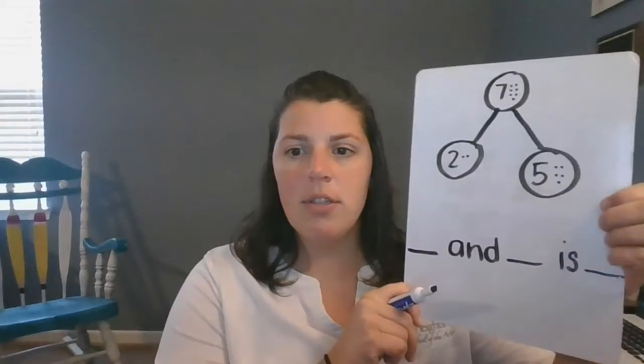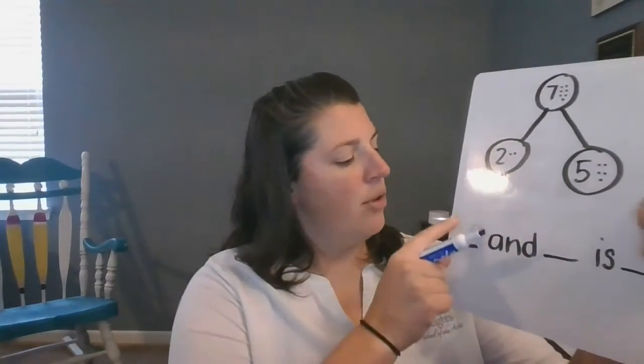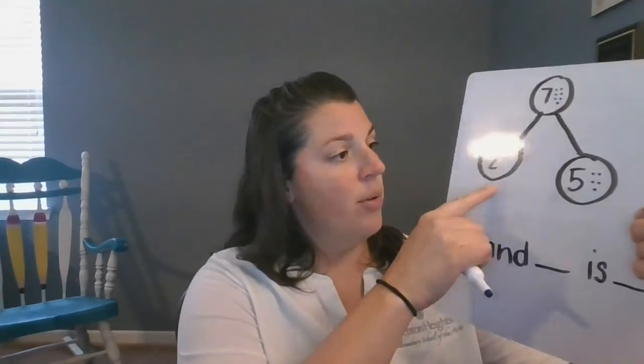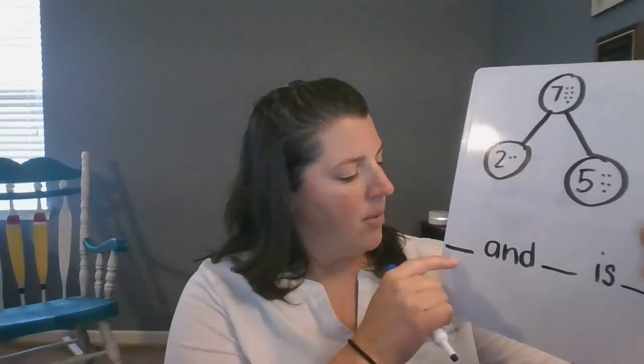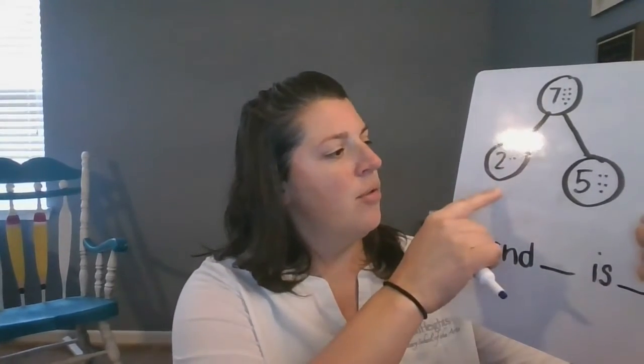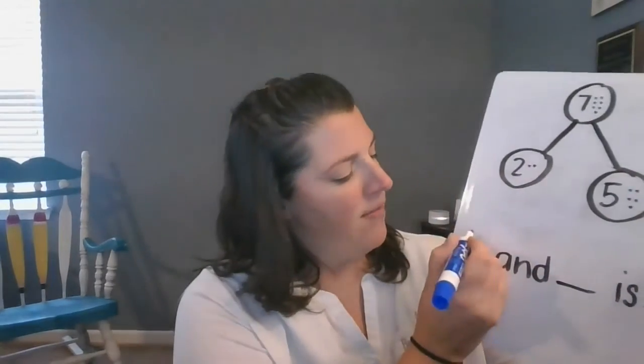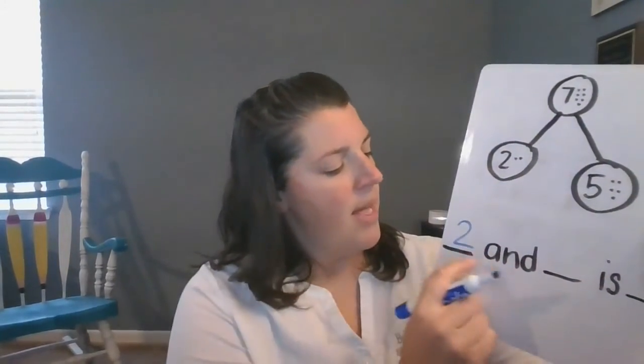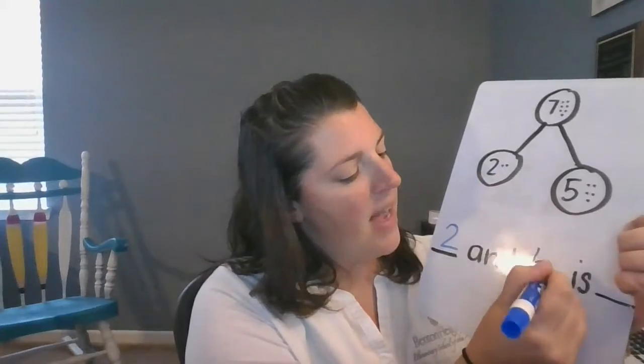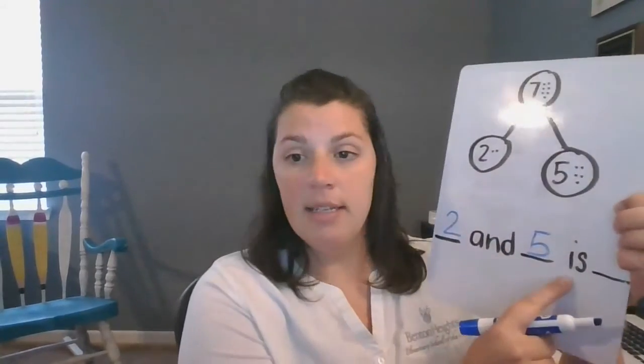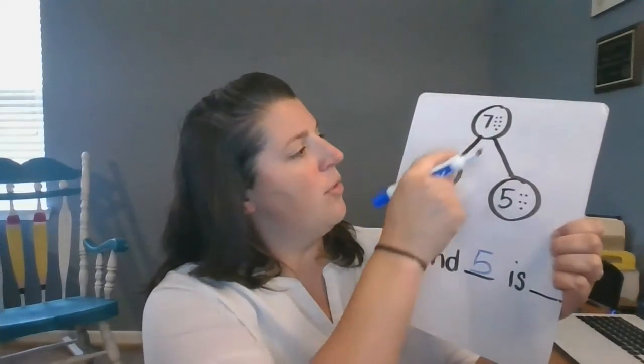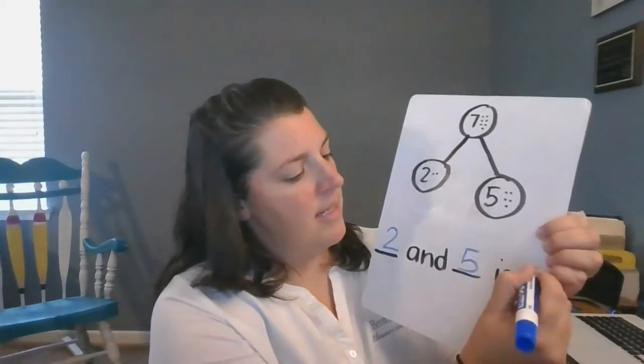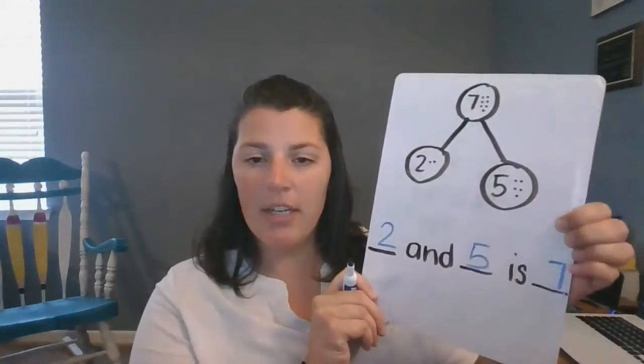So, here's what I heard. You took the parts two and five. I heard that word, blank and blank. Two and five. So you filled in two and five is seven. Very good.